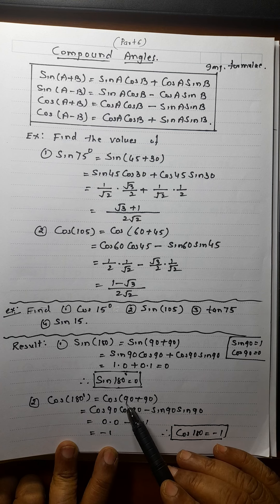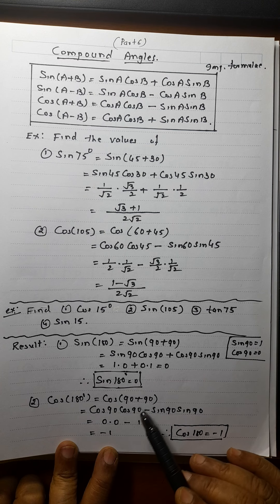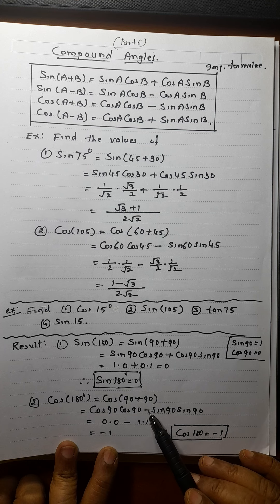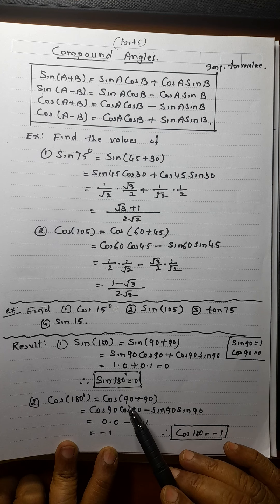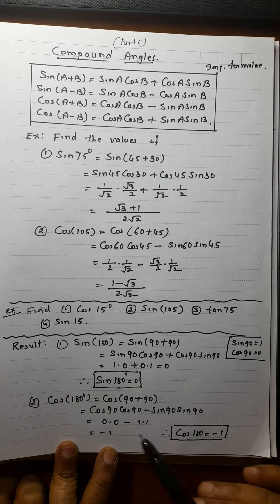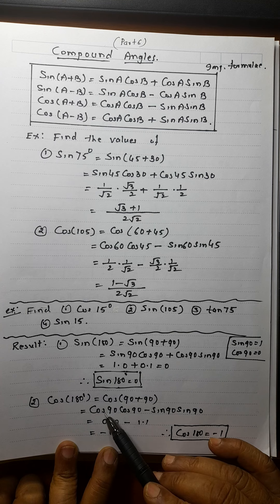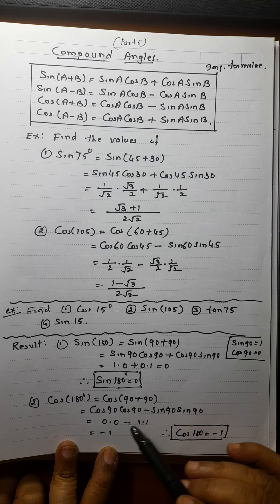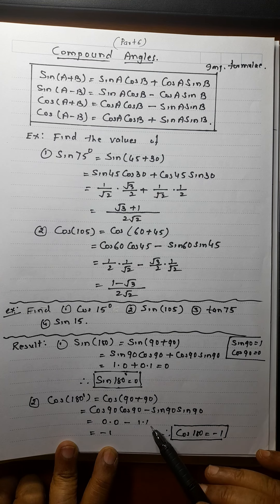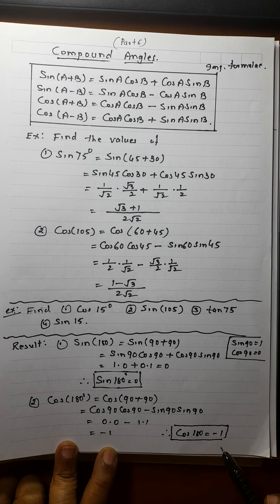Cos of 180° equals cos of (90°+90°). It is cos 90° cos 90° minus sin 90° sin 90°. Here A and B are the same. Cos 90° is 0, cos 90° is 0, sin 90° is 1. So the answer is 0 minus 1×1 = −1. Therefore, cos 180° = −1.